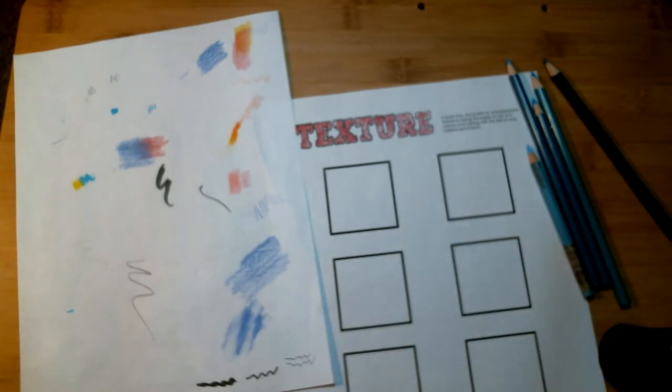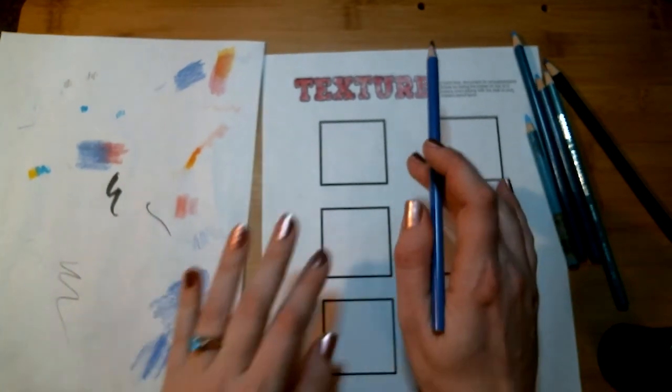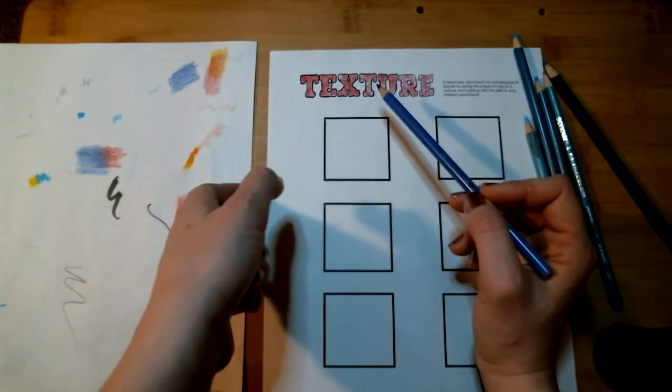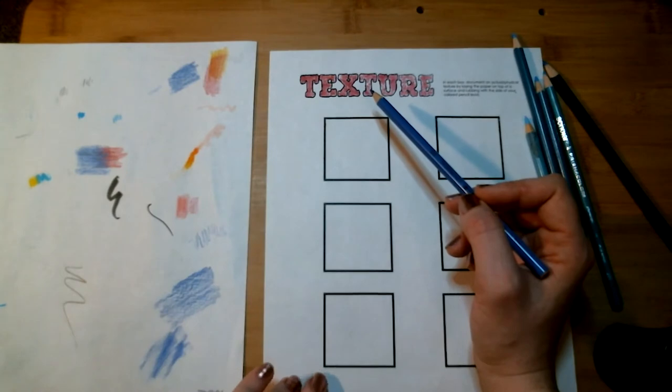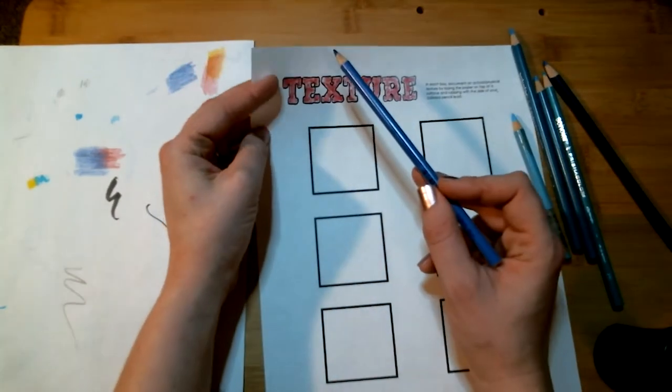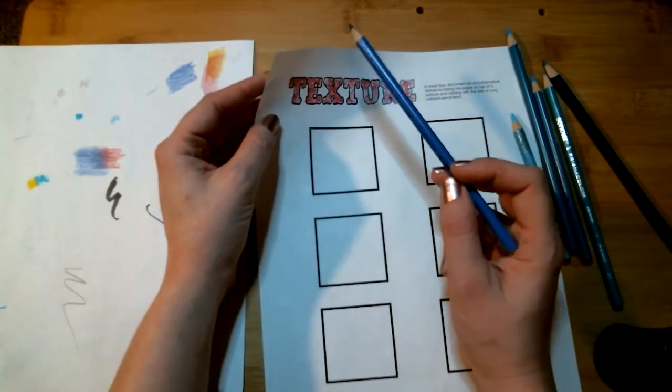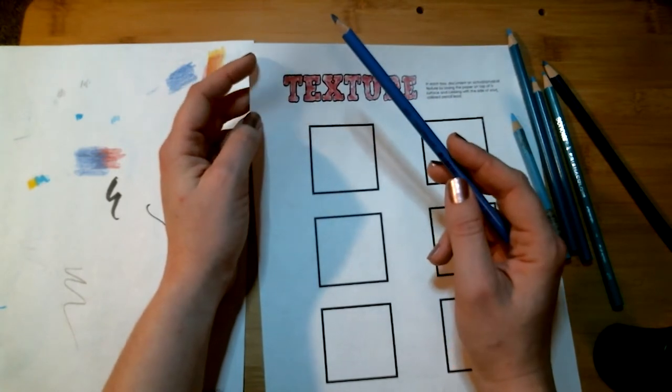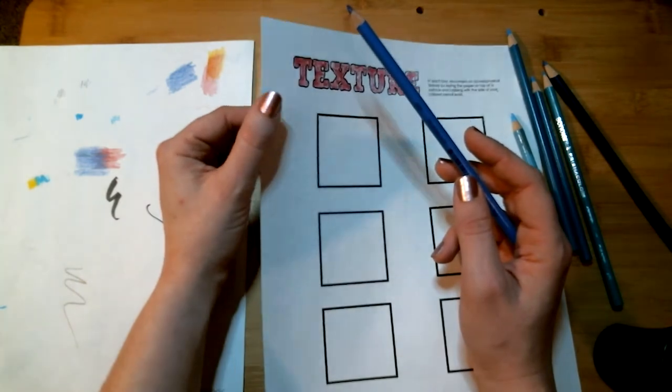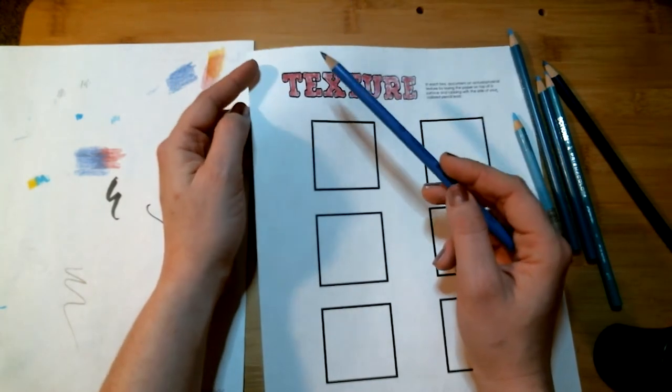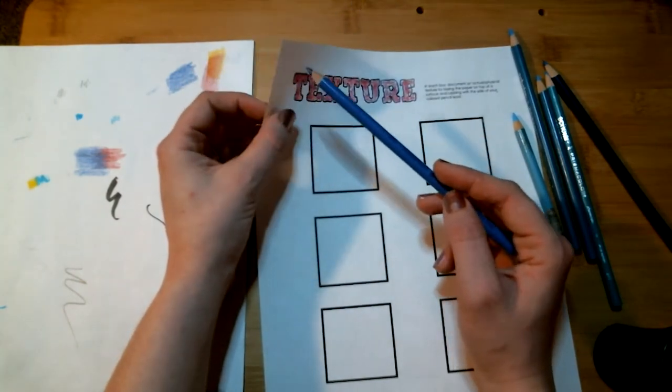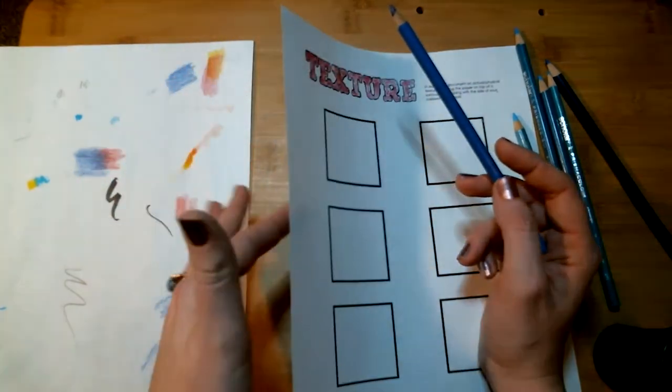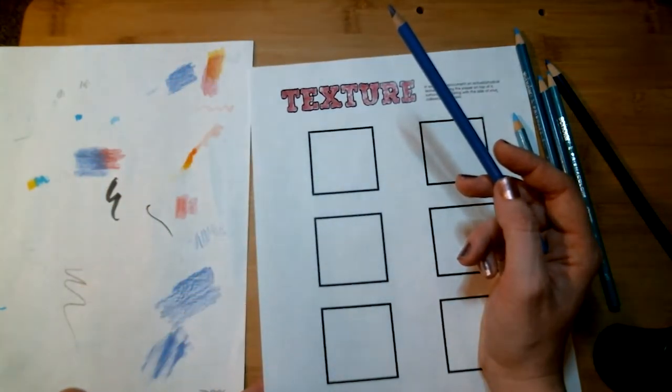Another thing to keep in mind for this project is the thickness of your paper. This is the only project we're going to do where I do recommend that you do this one printed out on printer paper. If you print this out onto cardstock, your paper texture is going to be so heavy it's going to be hard for you to get a good rubbing on it. The thinner your paper is, like printer paper, the better rubbings you're going to get.